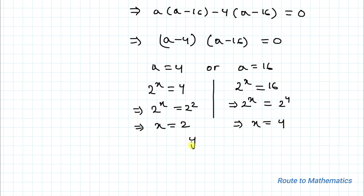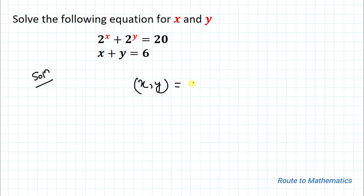Since y equals 6 minus x from equation 2: for x equals 2, the value of y is 4; and for x equals 4, the value of y is 2. Thus our solutions for (x, y) are (2, 4) and (4, 2).